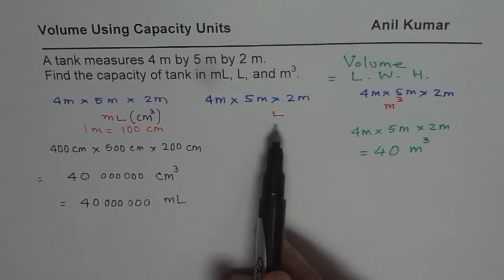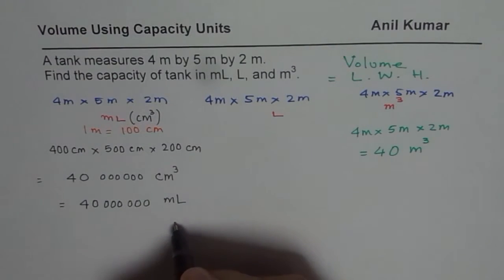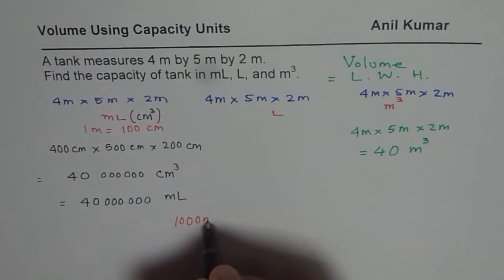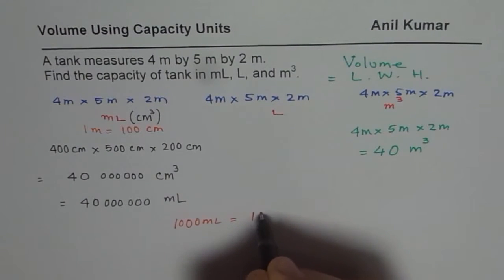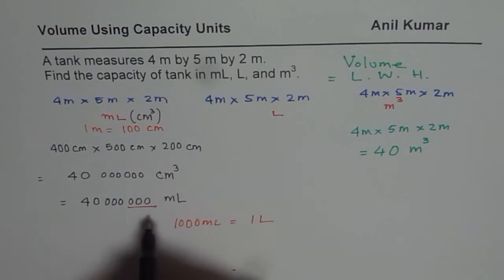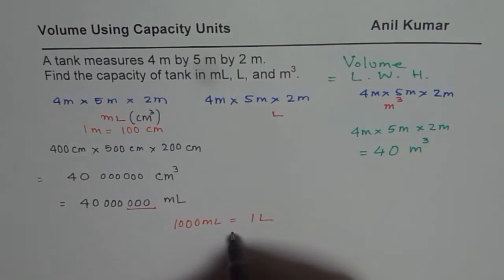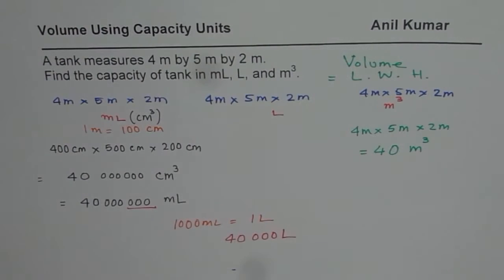Now to find liters, one way of course is, we know that thousand milliliters equals to one liter. So using this conversion factor, what we can do is we can divide by thousand. We get 40,000. So we should get answer here is 40,000 liters. That should be our answer. And that we did from conversion.